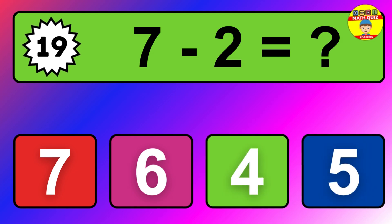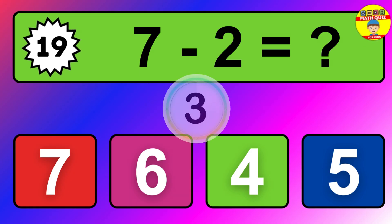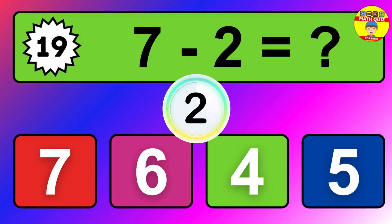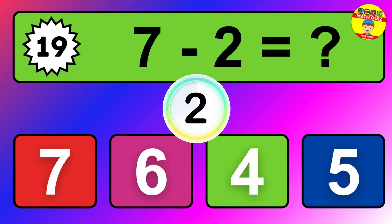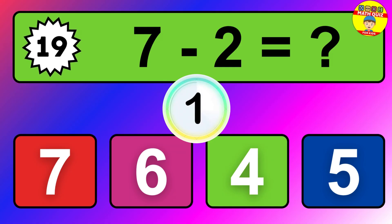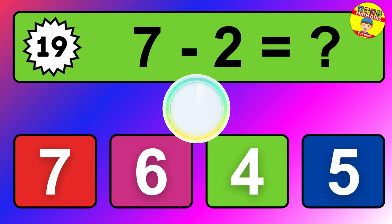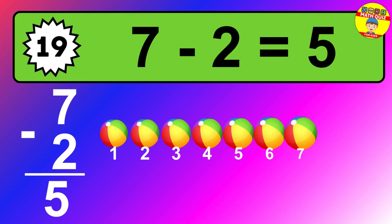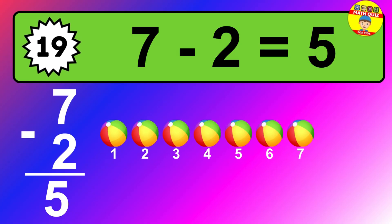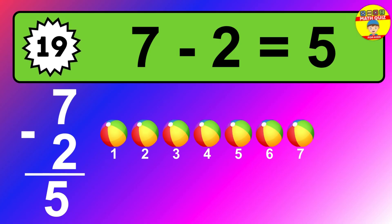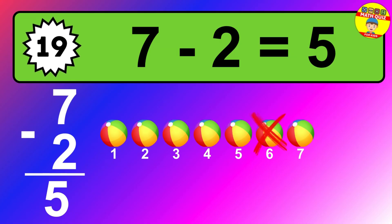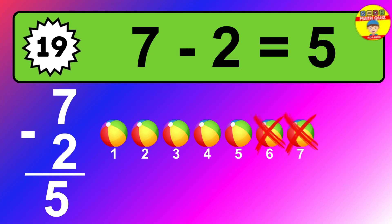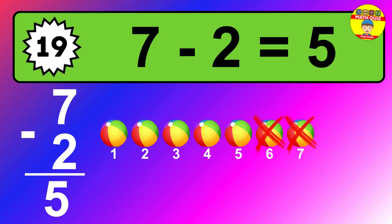Question 19. 7 minus 2 equals what? So the answer is 7 minus 2 is 5. Let's count it. 1, 2, 3, 4, 5.